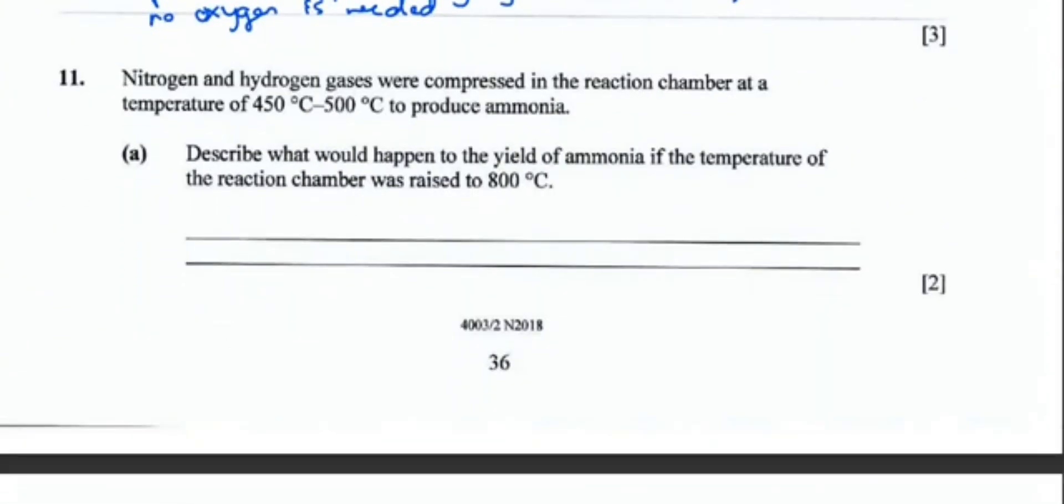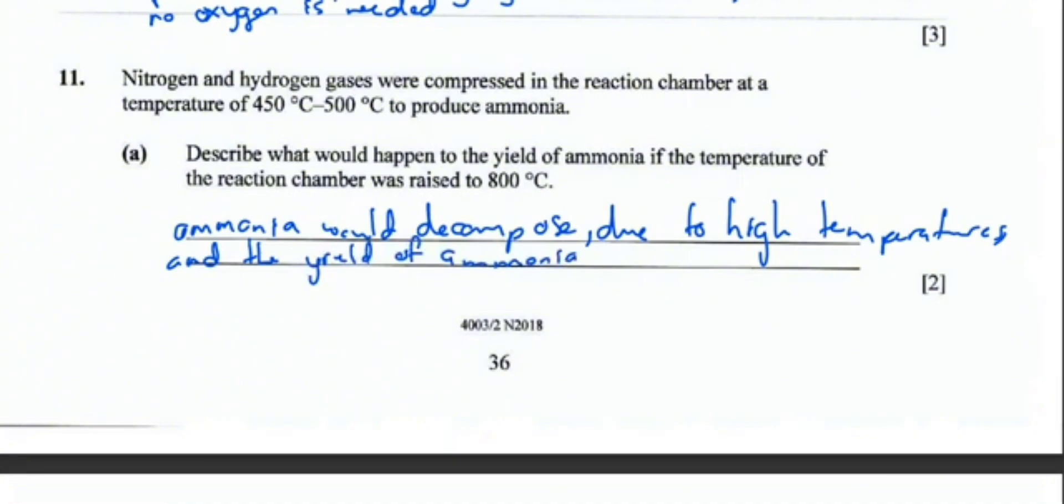Let's move on to question 11. Nitrogen and hydrogen gases were compressed in the reaction chamber at a temperature of 450 to 500 degrees Celsius to produce ammonia. Describe what would happen to the yield of ammonia if the temperature of the reaction chamber was raised to 800 degrees Celsius. When we increase the temperature, because the reaction is in equilibrium and is exothermic because it gives out heat at these optimum conditions, if we increase the temperature it will mean that ammonia would begin to decompose, favoring the backward reaction. Hence the yield of ammonia would decrease because of that decomposition.